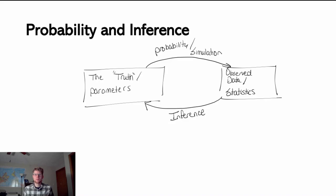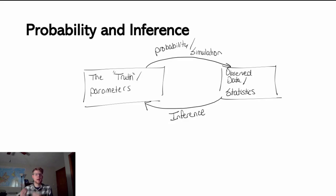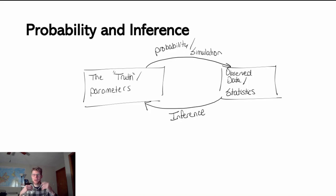We're going to spend time talking about simulation: we start with some parameters and think about what could happen — the distribution of possible sample statistics we could get. There is a distribution of possible beta hat one values I could get when I randomly sample from the true distribution. If I take a sample of 50 data points and calculate a beta hat one, then take another sample and calculate another, they're never going to be quite the same. But if I kept taking samples, I'd begin to see a distribution of possible beta hat ones, centered around the true beta one parameter.